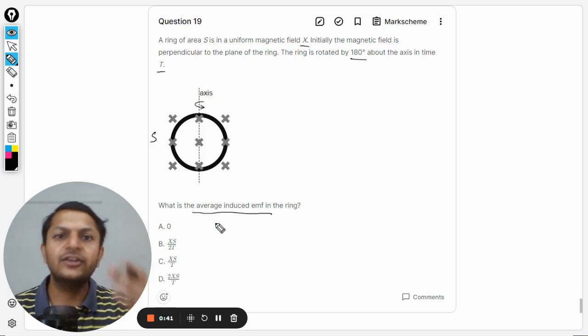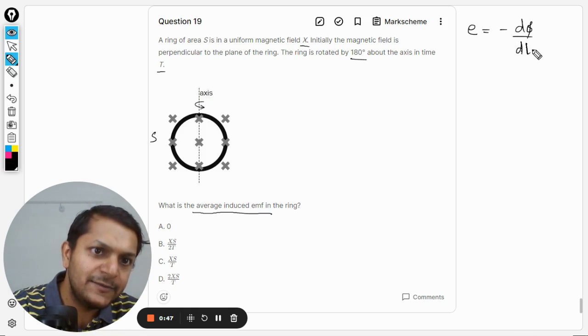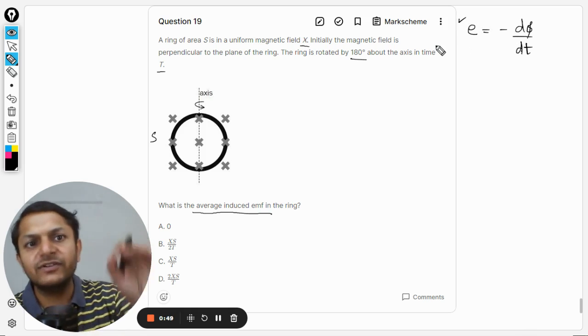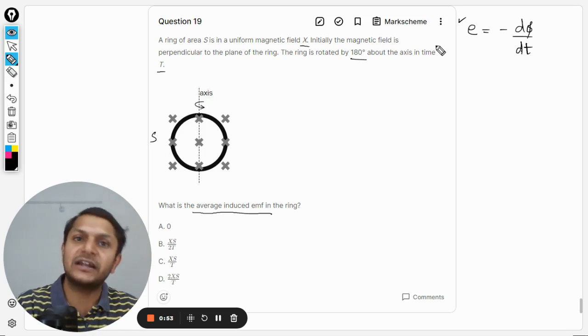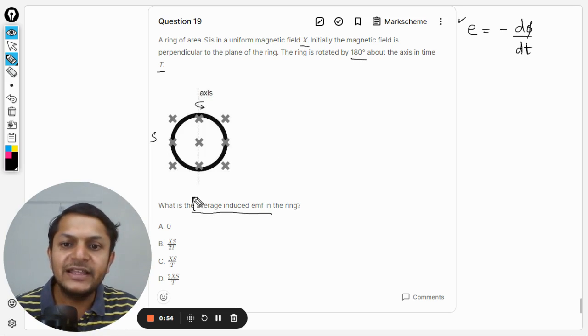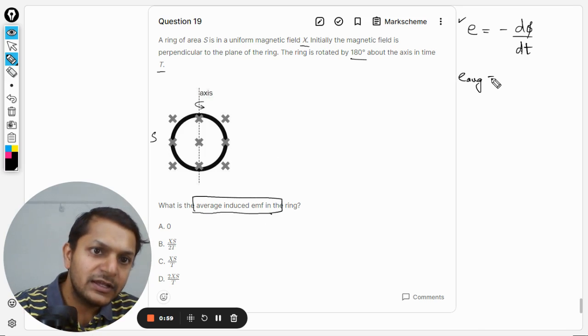Let us again try to do this. So as I've already told you that E is equal to negative dφ/dt. This is the formula actually given by Faraday and this formula belongs to the instantaneous EMF that is induced, but we want to find the average value induced.